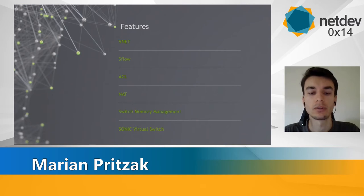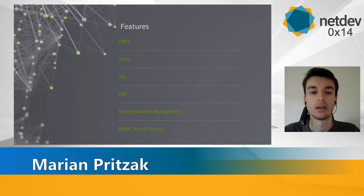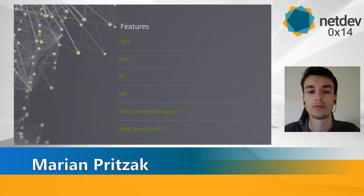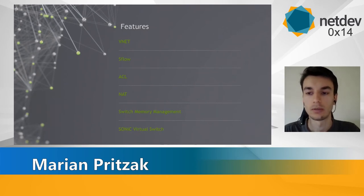These features include VNet, which is VXLAN routing; SFlow for sampling; access control lists; NAT; switch memory management; and SONiC Virtual Switch, which is used for generic feature testing and which I will also talk about at the end.